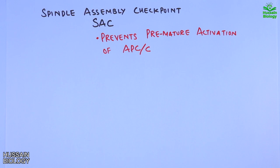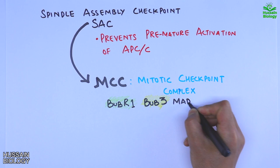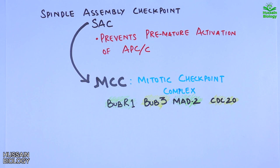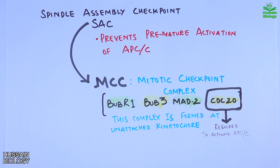The spindle assembly checkpoint prevents the premature activation of APC protein. This SAC is driven by a complex set of proteins called MCC — the Mitotic Checkpoint Complex. It consists of four important proteins: BubR1, Bub3, Mad2, and Cdc20. It must be noted that this complex is only formed when we have an unattached kinetochore.